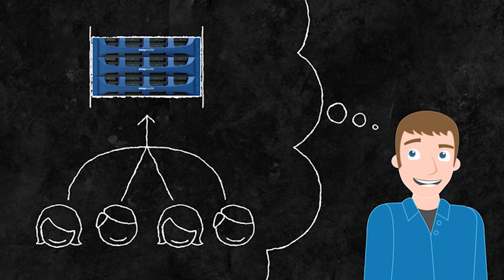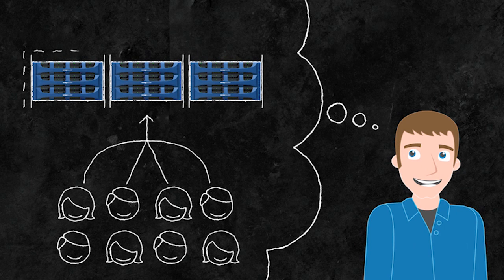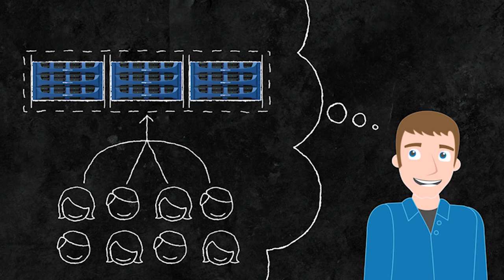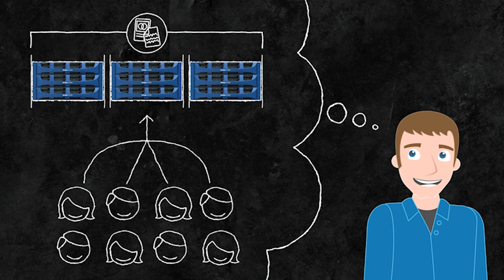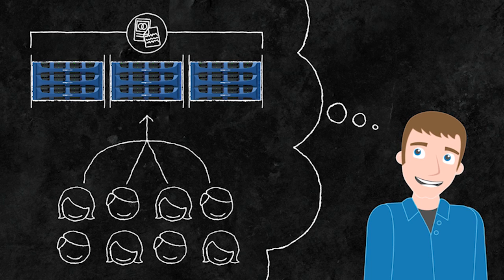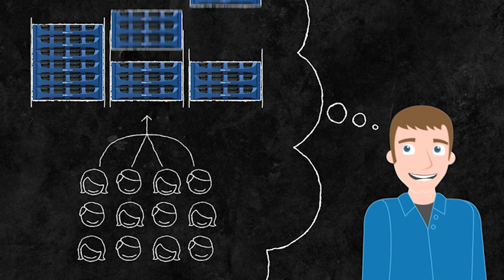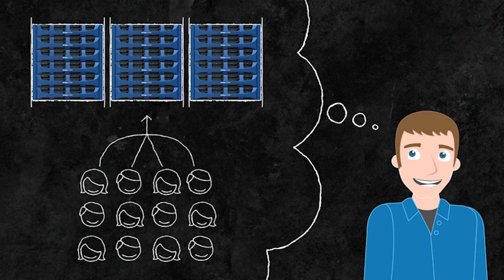SnapScale gives Todd the benefit of having multiple systems working together to give him and his users the highest performance and reliability possible at all times. And because data is uniformly distributed across nodes, Todd can scale performance and redundancy easily by simply adding more drives or nodes to the cluster.